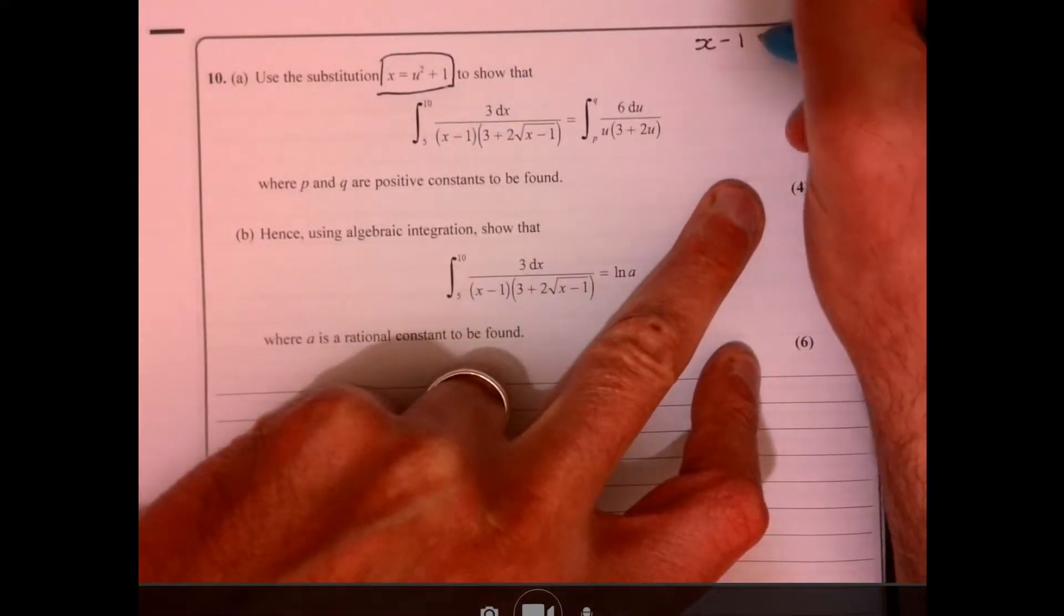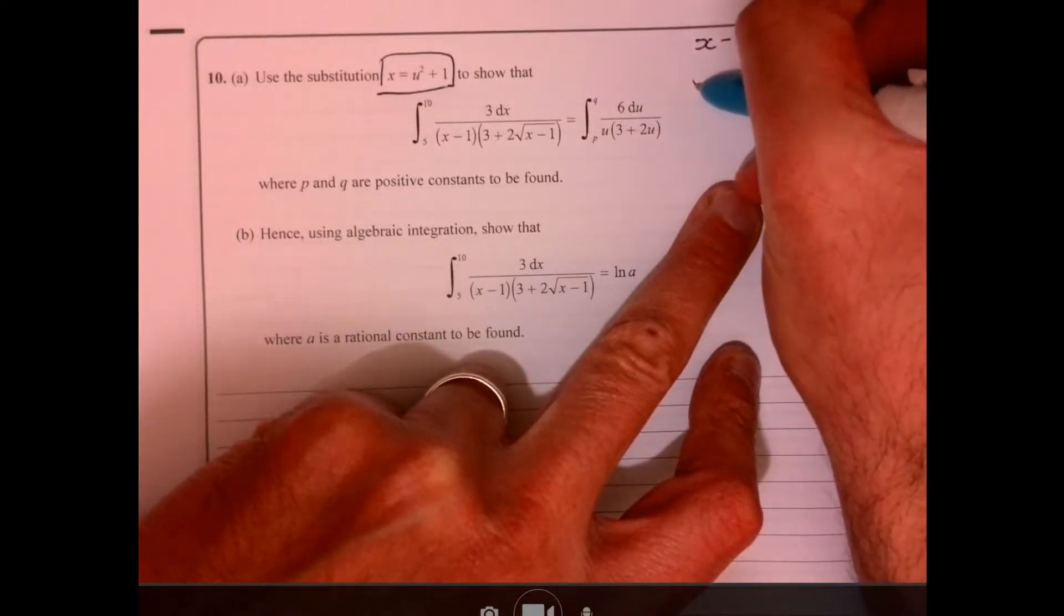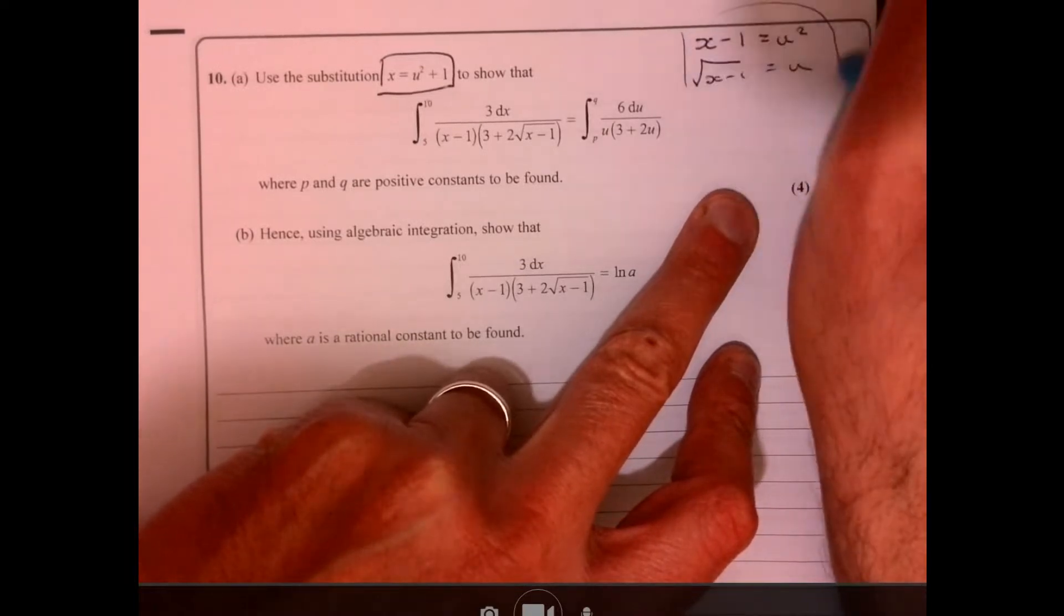So I could have x minus 1 equals u squared, and I could also have root x minus 1 equals u. Now, they're all going to be useful.